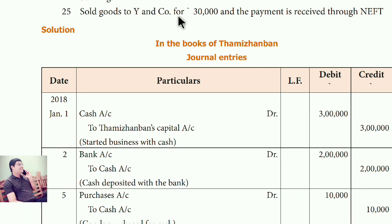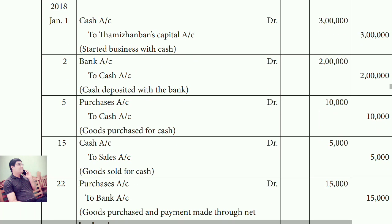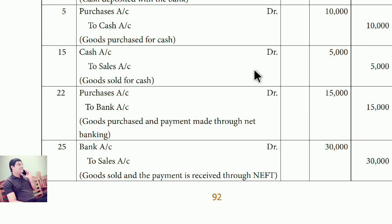You sold goods to Exend Company for Rs.30,000, and the payment is received through net banking — through bank. The money comes back into the bank, so bank is debited wherever money comes in. You sold goods, so sales is credited. Entry: Bank account debit, to sales account.